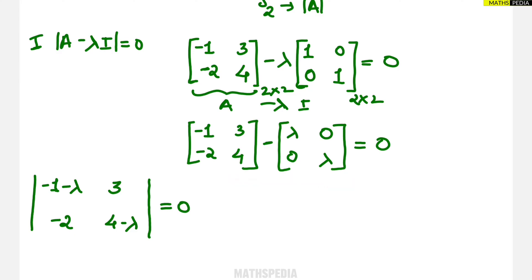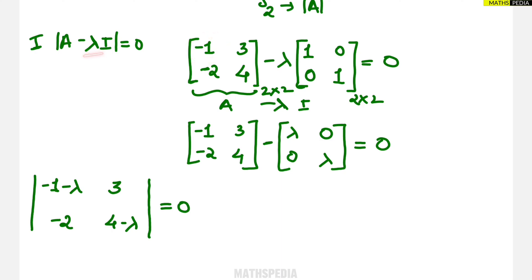You can directly write this without going through every step — that is just for explanation. The simple observation is that the diagonal elements minus 1 and 4 each get minus lambda subtracted, while the off-diagonal terms 3 and minus 2 remain the same. Just equate the determinant to zero and find the answer.